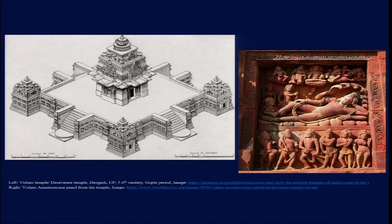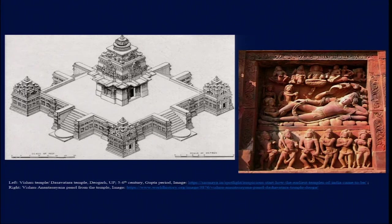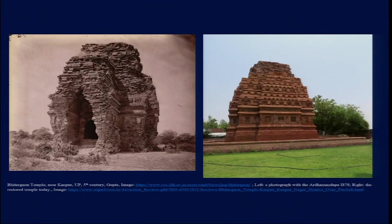Another example of this multiplication is the Dashavatara temple from Deogarh in Uttar Pradesh, also in the Gangetic plain. The Dashavatara temple uses local sandstone — locally available resources utilized by artisans, sculptors, and architects for making magnificent structures. Along with the Bhitargav temple, the Dashavatara temple is considered one of the earliest surviving Hindu temples in the Indian subcontinent, with the Bhitargav temple being perhaps the earliest surviving brick temple.